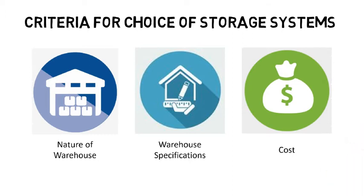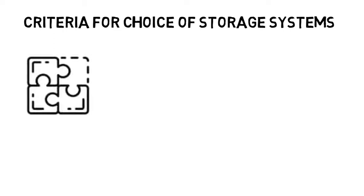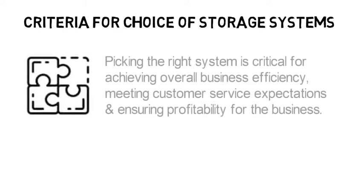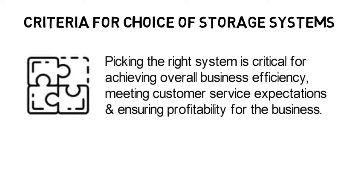Warehouse specifications: what is the floor area? What is the clear ceiling height? And cost: what is the company's budget? What are the cost constraints faced by the company? More than one system is usually combined in the same warehouse depending on the needs of the business. Picking the right system is critical for achieving overall business efficiency, meeting customer service expectations, and ensuring profitability for the business.